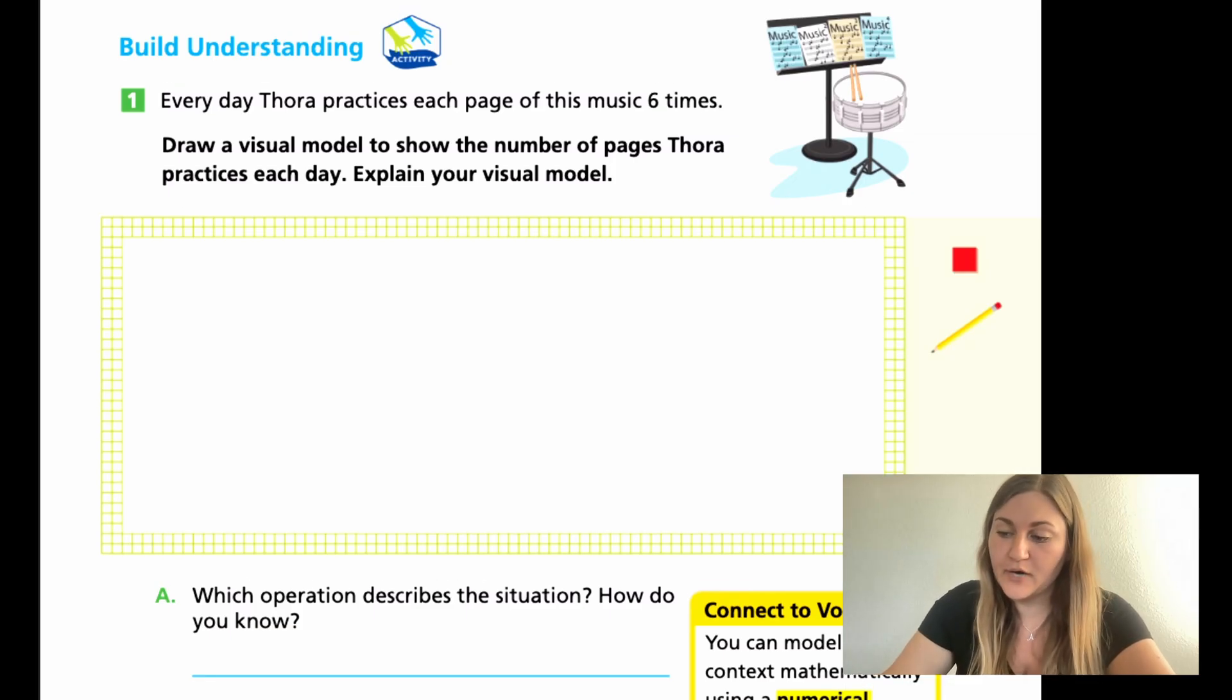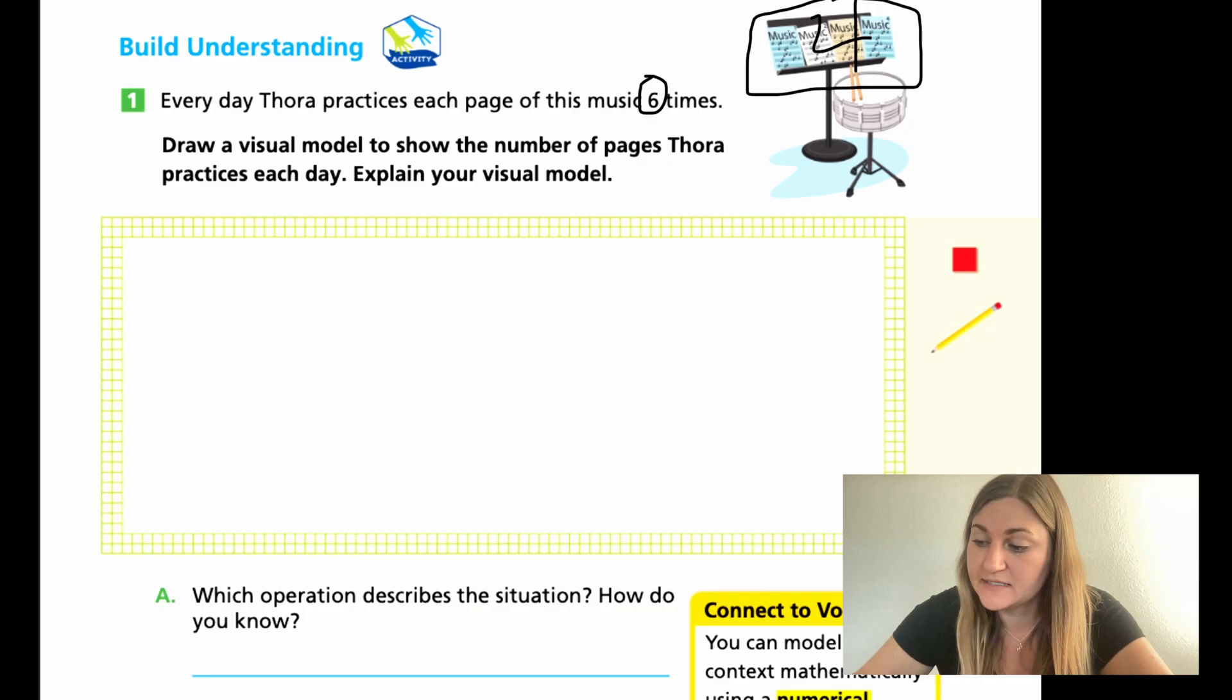Alright, so now we're going to move on to the build your understanding question number 1. It says, Every day, Thora practices each page of this music 6 times. Draw a visual model to show the number of pages Thora practices each day. Explain your visual model. Okay, remember, when I always say go back, look for your numbers, sometimes it's a little bit tricky because if there's an image giving you information, it might not tell you in the actual words in the word problem. So, it says, Every day, Thora practices each page of this music. What music? Well, if you look over in this image, they're talking about this music here. And if you look, there's different colored pages. There's a blue, a white, and then like a beige-y yellow, and then a blue. So, there are 4 pages of music that Thora practices 6 times a day.